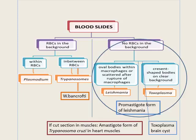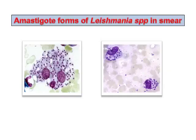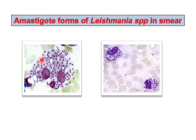When there are no RBCs in the background but the field is full of many small cells, we think of Leishmania amastigote form. The round structures represent macrophages that have ruptured, releasing amastigotes between them. The presence of amastigotes between macrophages is the amastigote form of Leishmania species in smear.